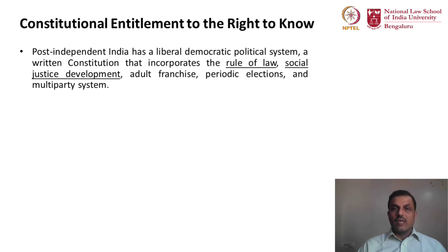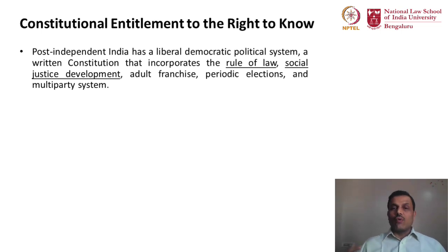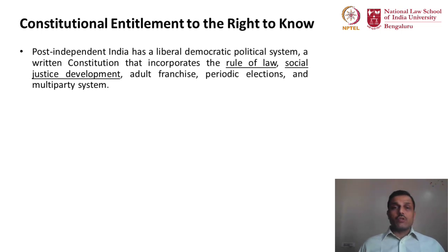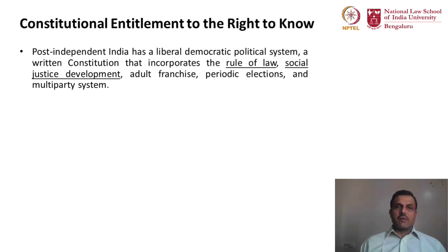Having chosen the kind of government, having chosen the social justice development model, the people of this country laid the path to what the government must do and what it need not. It was a choice that our founding fathers, who adopted the Constitution, were very clearly given. Post-independence, we decided what kind of law and what kind of development we actually wanted to pursue.